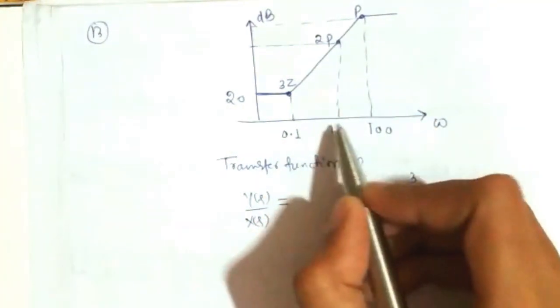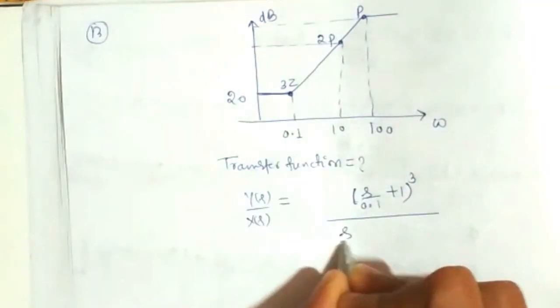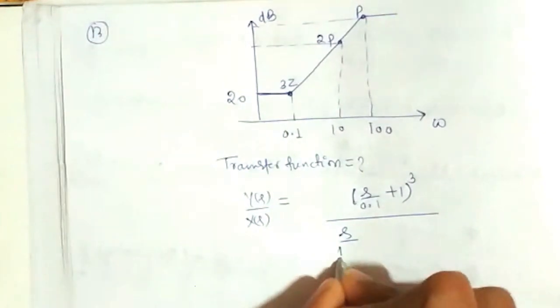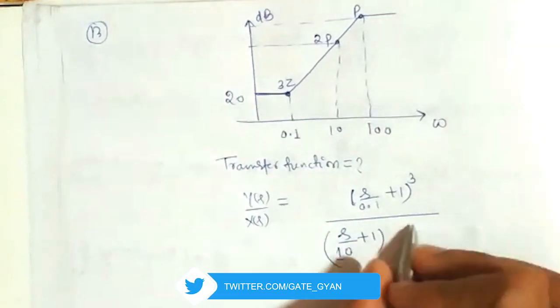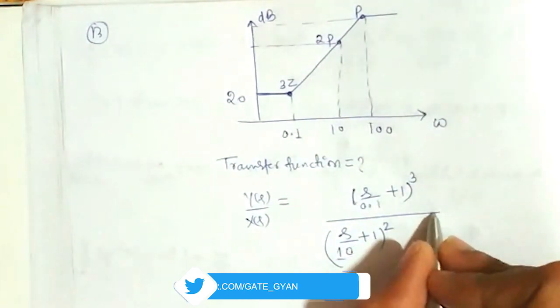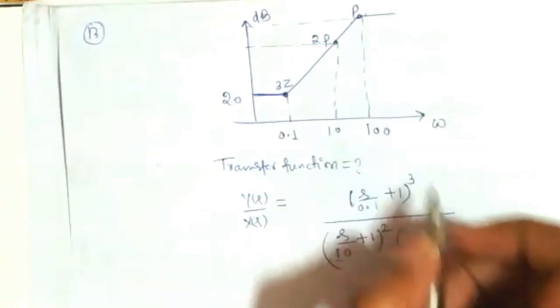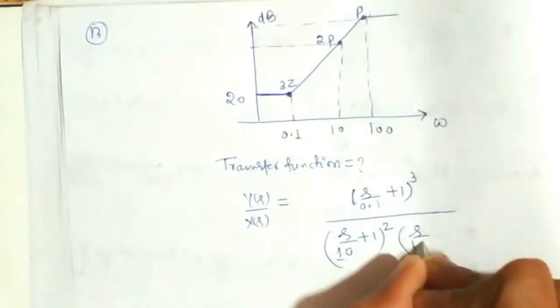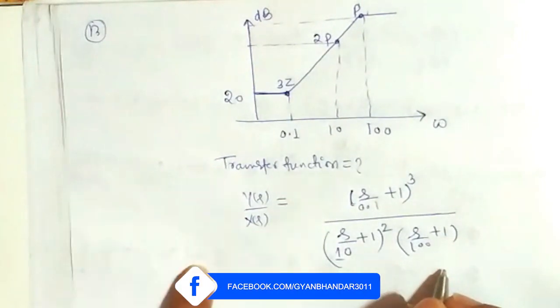Then, at omega equal to 10, here there are two poles at this point. So, my second term is going to be (s/10 + 1) square, which is going to be a pole. And another pole is here at omega equal to 100. So, it is going to be (s/100 + 1).